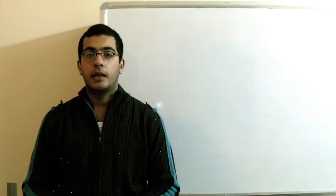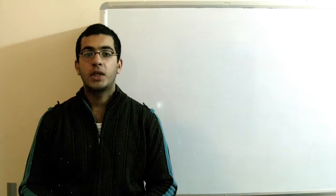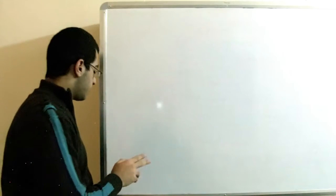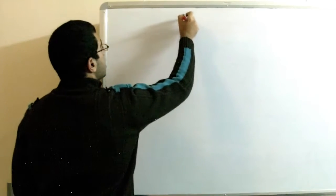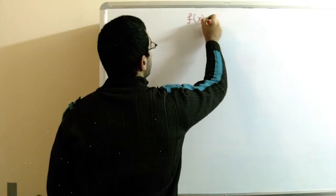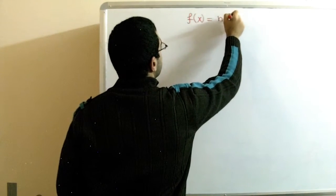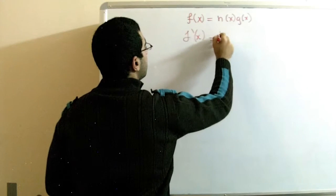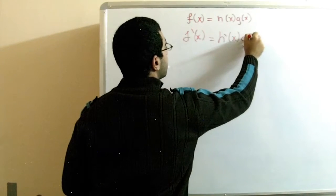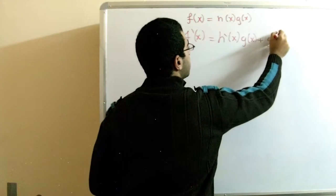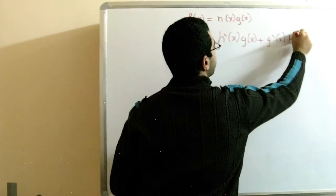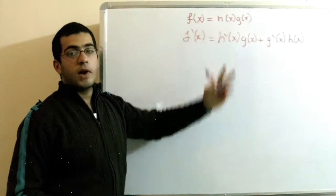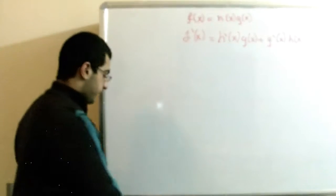Hello everybody and welcome back. Last time we mentioned the rule for getting the derivative of a composite function with two functions multiplied by each other. We had f(x) = h(x)·g(x), so f'(x) = h'(x)·g(x) + g'(x)·h(x). That rule was for two functions. What if we have three functions?